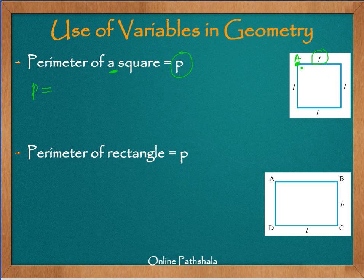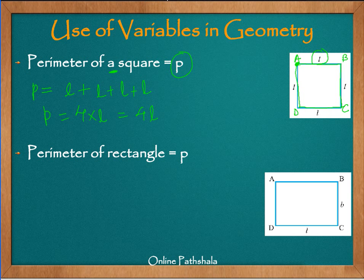We travel along the periphery of the square and add up the length traveled. We travel from point A to point B, covering length l, then B to C, C to D, and D back to A, and then add the four lengths. That is l + l + l + l, or simplified, 4 × l. This gives us p = 4l, which is the general rule for finding the perimeter of a square whose side length is l.